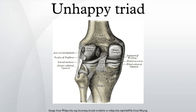The term 'unhappy triad' was coined by Adenogat in 1950. However, since then, this term and the term 'terrible triad' have also been used to describe several other combinations of joint injuries, including those of the elbow and shoulder. The term 'terrible triad' is also sometimes used in the popular press to describe conditions relating to pain, or even to refer to the McDonald triad of sociopathic behavior.